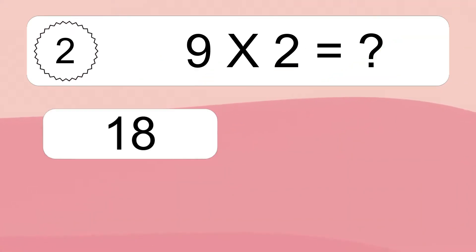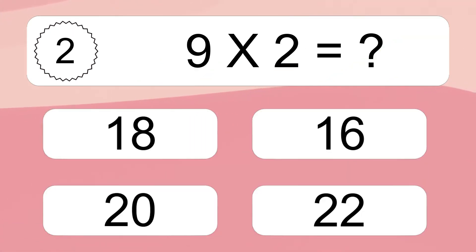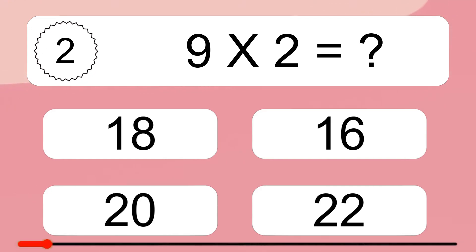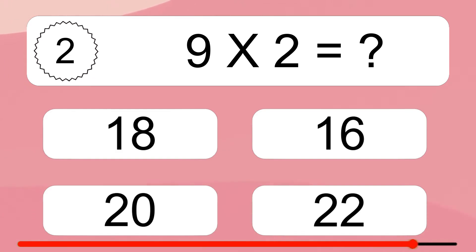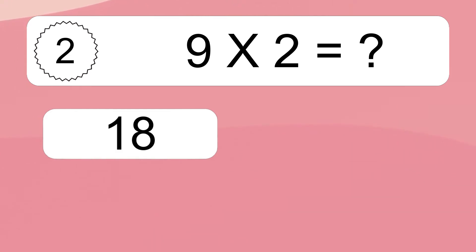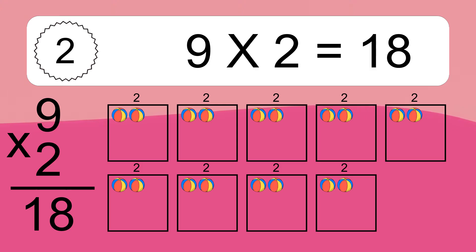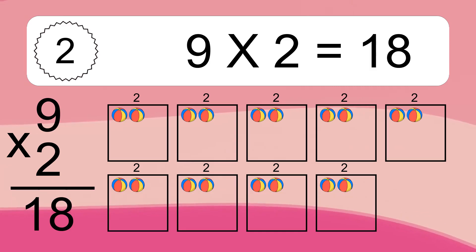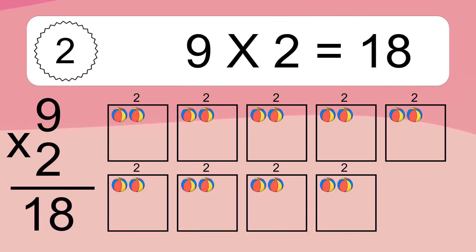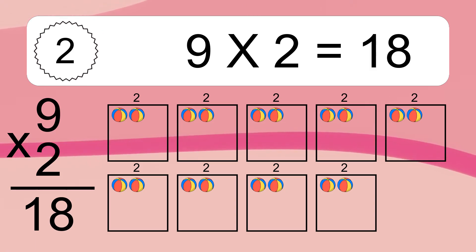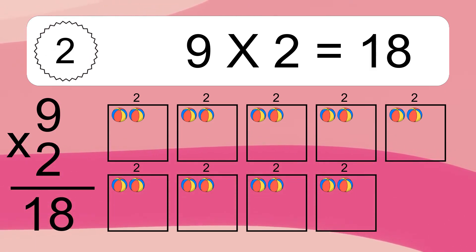Nine times two equals what? Nine times two equals 18. We have nine boxes and each box has two colorful balls inside. If you count all the balls in all the boxes together, you will have nine times two balls. This equals 18 balls.